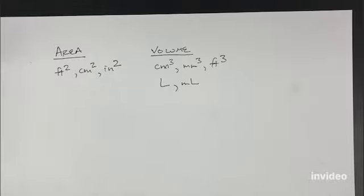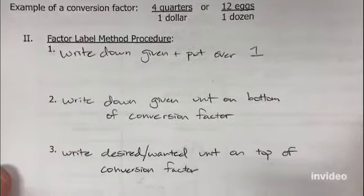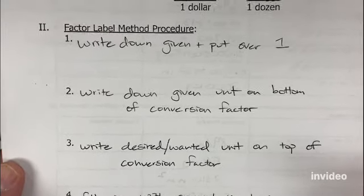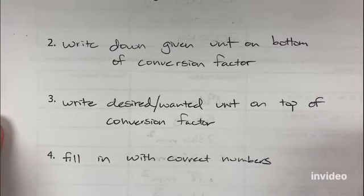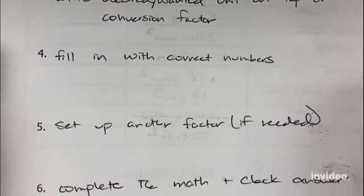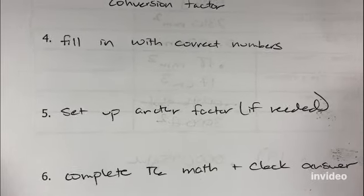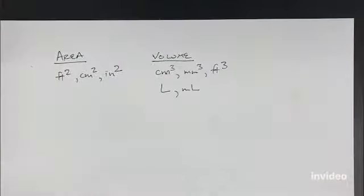When we deal with area and volume unit conversions, we still do all of our normal steps in factor labeling. We still write down our given and put it over one. We still cancel out our given unit in our first step and put it on the bottom of our conversion factor. We still put our desired unit on top, fill in with our correct numbers, set up multiple steps if we need, and complete the math and check our answer. There's just going to be one different thing we do in our conversion factor.